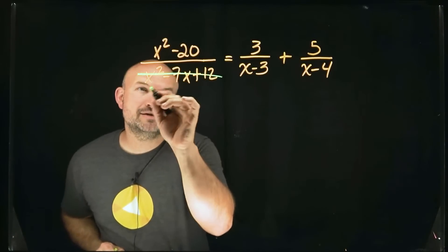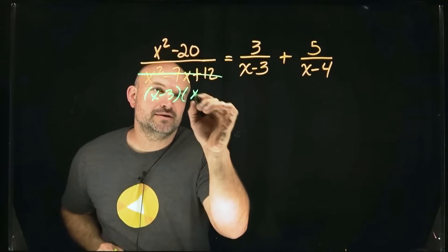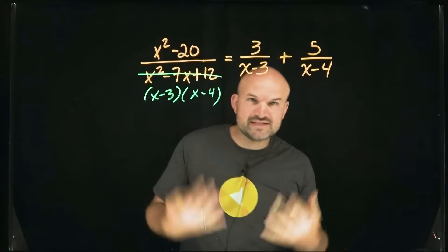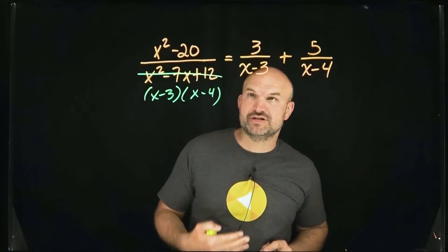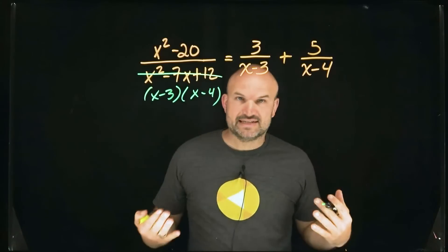If I were going to factor this, it would be x minus 3 times x minus 4, right? The reason why that's important is because when we're solving a rational equation, what we typically want to do is get rid of the denominators.